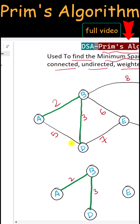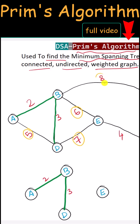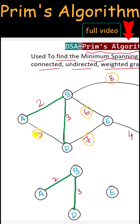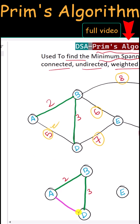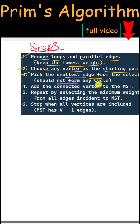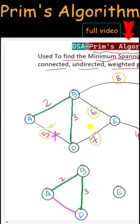Now we compare the edges connected to A, B, and D — that means we compare between five, seven, six, and eight, and choose the smallest. Five is the smallest, but we cannot choose that edge because it would create a cycle. There should not be any cycle in a spanning tree, so we skip that edge.